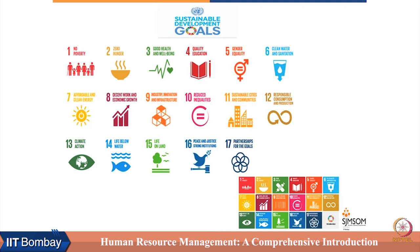The goals also include facilitating industry innovation and infrastructure, reducing inequality, sustainable cities and communities, responsible consumption and production, peace and justice and having strong institutions, partnership for the goals, life on land, life below water, and climate action. These are the 17 sustainability goals adopted by all the countries of the world.